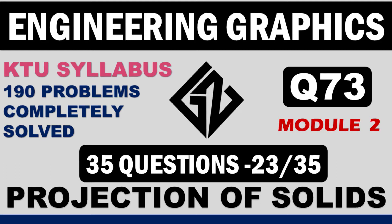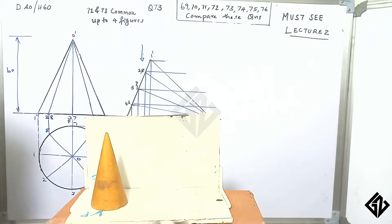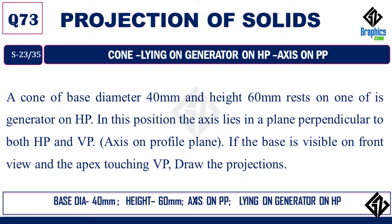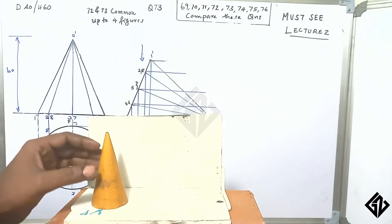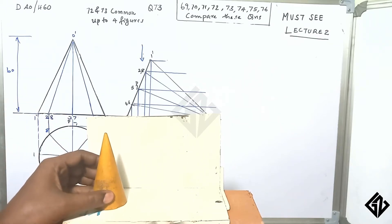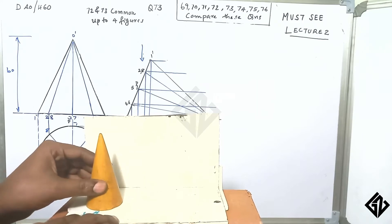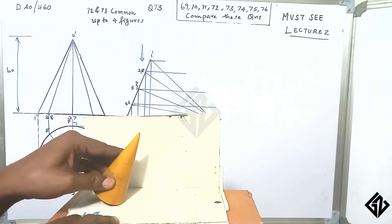Question number 73. What are the problems in 69 and 76? 72 and 73 are almost similar. Here are the 4 positions correct. Here are the 4 positions.